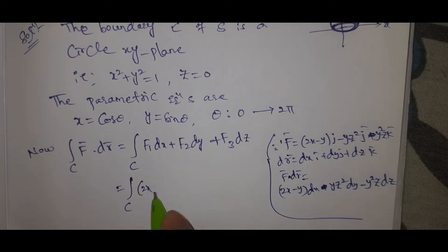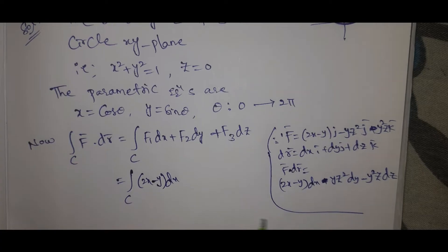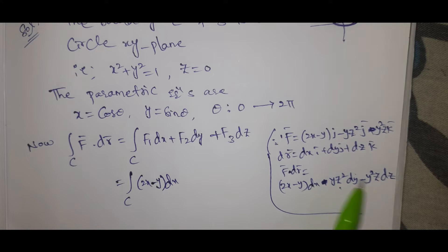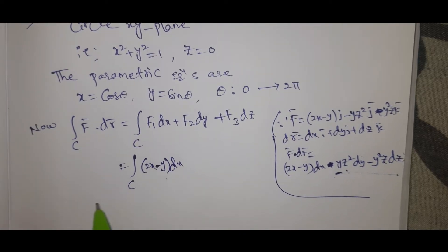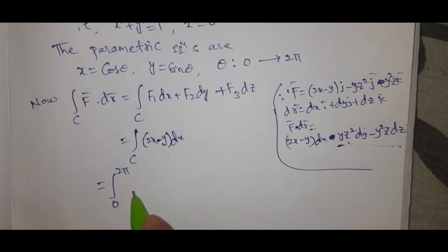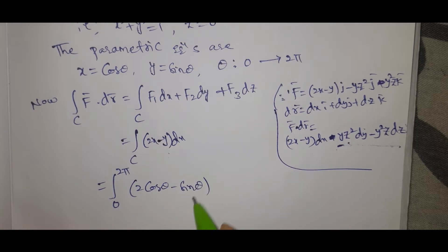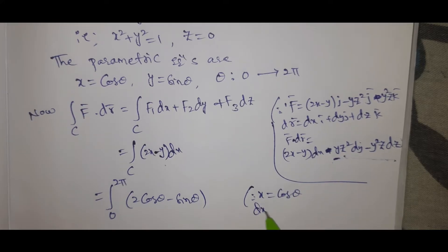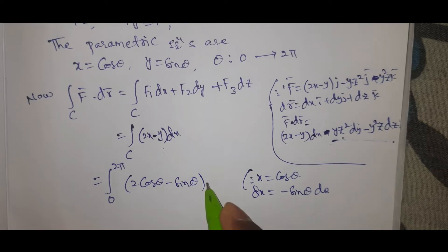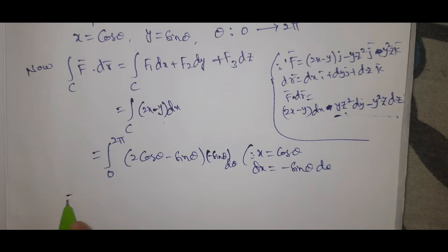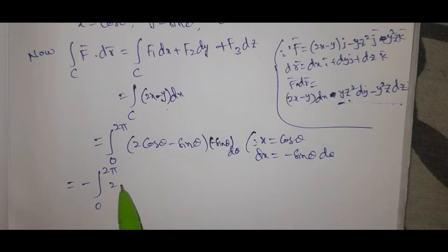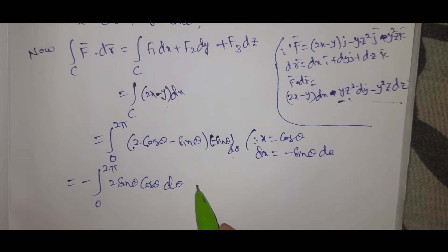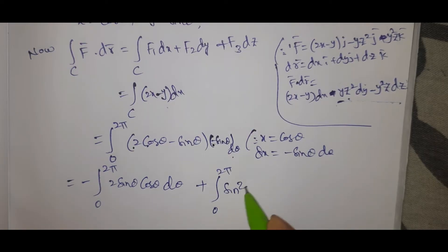The integral over C becomes ∫C (2x - y) dx, with z = 0 on the boundary. Substituting x = cosθ, y = sinθ, dx = -sinθ dθ, the integral from 0 to 2π becomes: ∫₀²π [2cosθ - sinθ](-sinθ) dθ = ∫₀²π (-sinθ cosθ + sin²θ) dθ, separating into two parts.